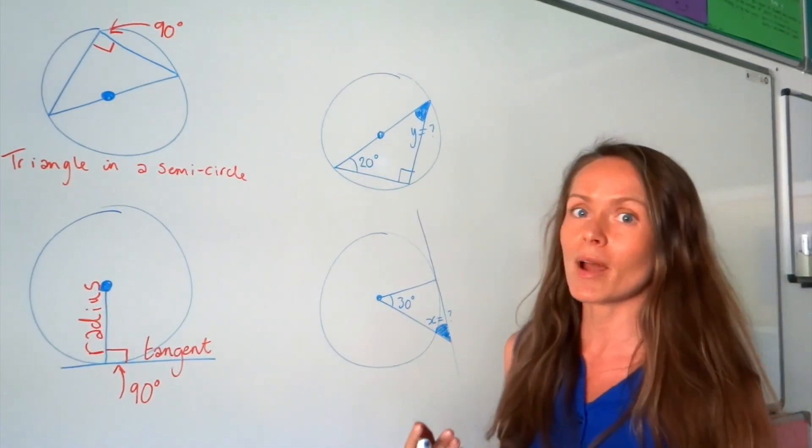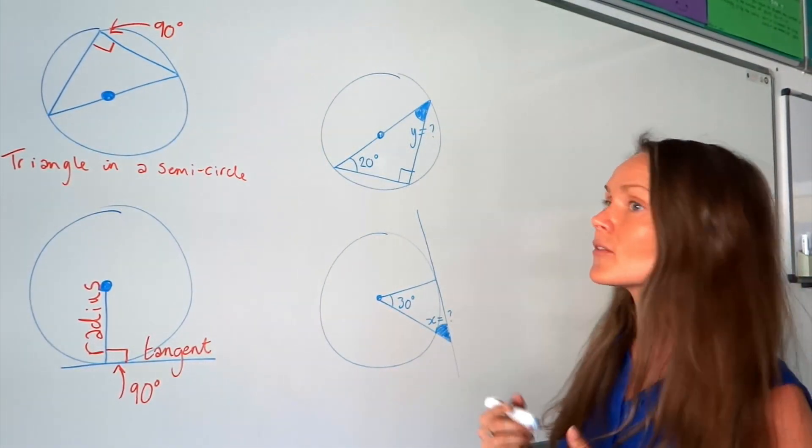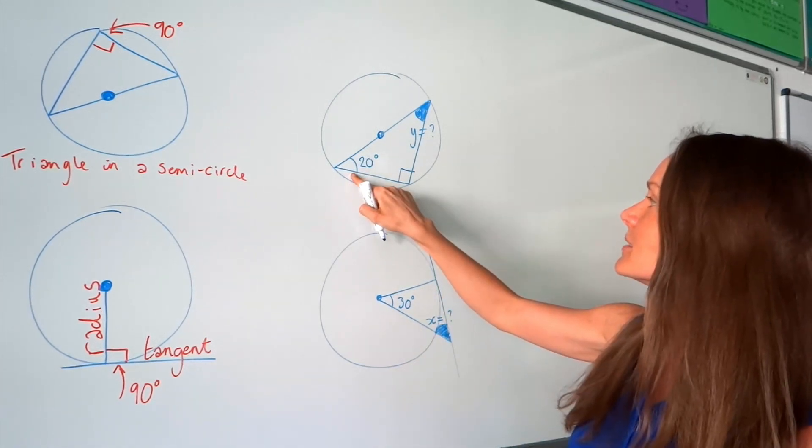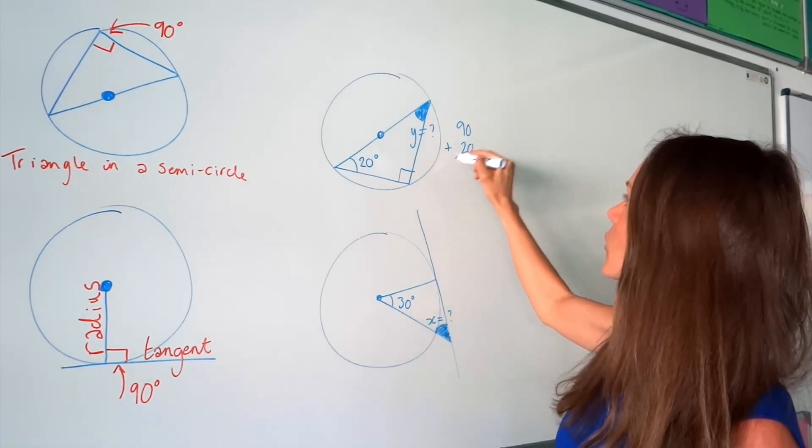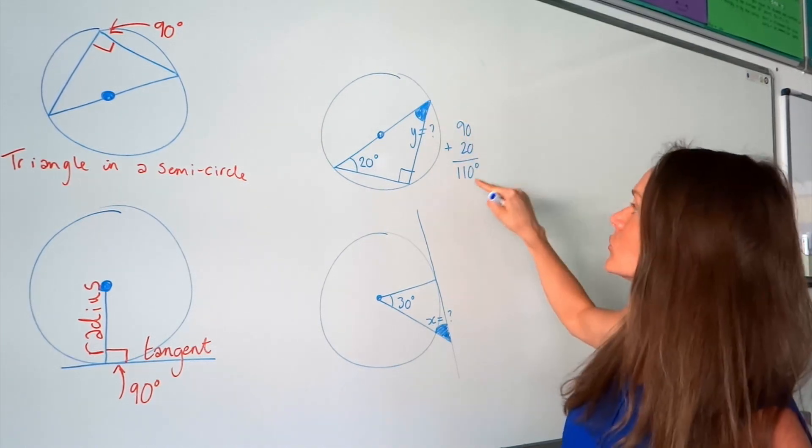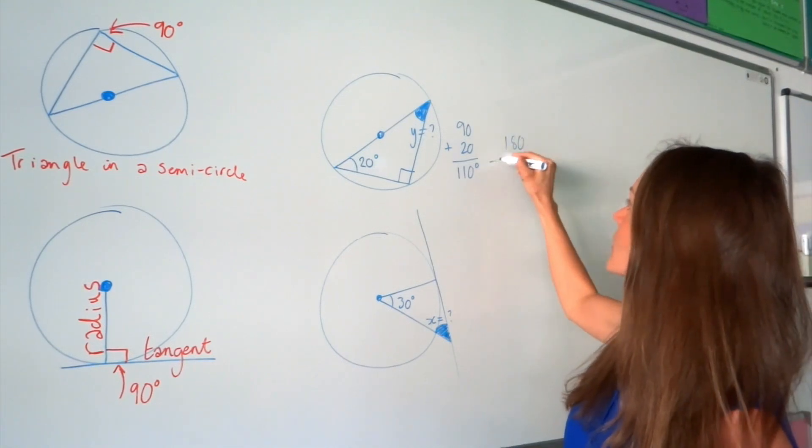So we also have to remind ourselves how many degrees there are in a triangle. In a triangle we have 180 degrees. So this one is 20, this one is 90. So, so far we've got 110 degrees.